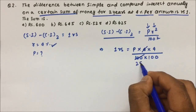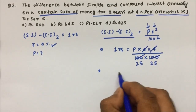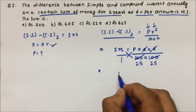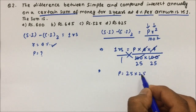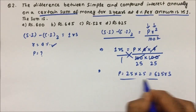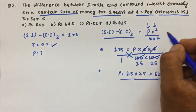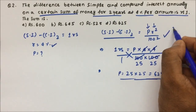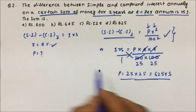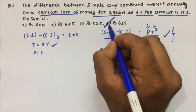4 divides 100 by 25 times, and the other 4 also divides 100 by 25 times. After cross multiplication, P = 25 × 25 = 625 rupees. So when asked to calculate the difference between simple and compound interest, we use the respective formula — for 2 years and for 3 years as seen in question 1. The correct answer, the principal, is option D: 625 rupees.